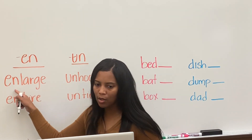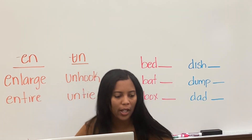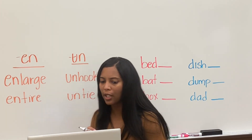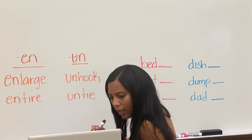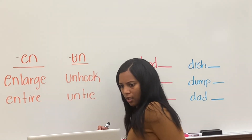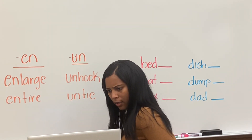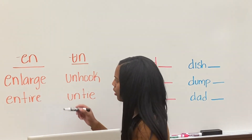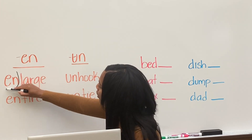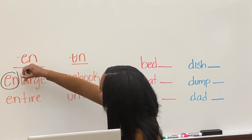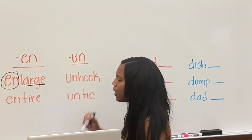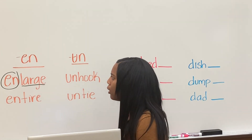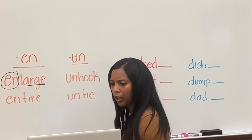And then what do we do to the root word? Underline it. Would anyone like to do this word for us — tell us how to mark it and read the word? Okay, go ahead Hannah. Circle the E-N, and underline the root word. Do you know the word? Enlarge. Good.